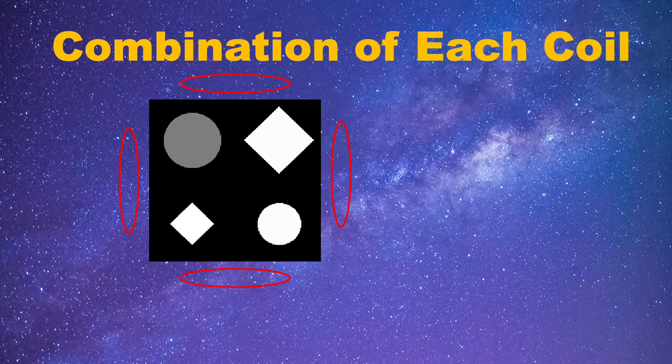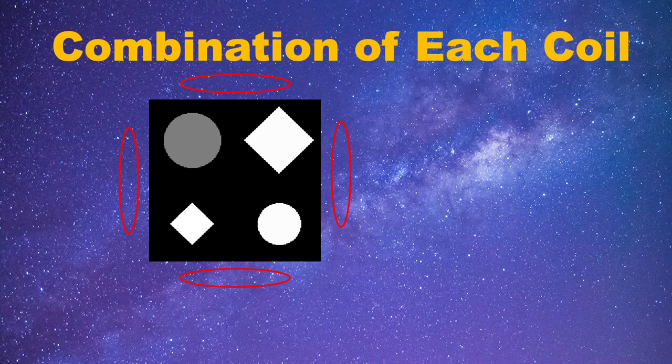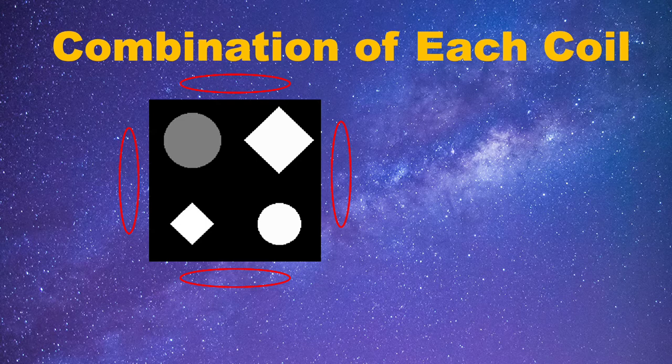Now, let's take a closer look at the image of each channel. Suppose this is the object we are going to image, and we have four coils placed like this, one on top, bottom, left, and right. Here are what these coils will get.